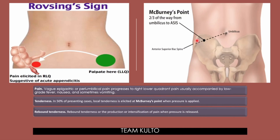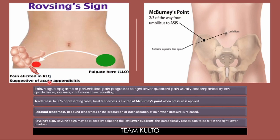Rebound tenderness — also known as the Rovsing sign — is the production or intensification of pain when pressure is released. You palpate the left lower quadrant, and the pain that the patient feels is referred to the right lower quadrant. A Rovsing sign may be elicited by palpating the left lower quadrant; this paradoxically causes pain to be felt at the right lower quadrant.